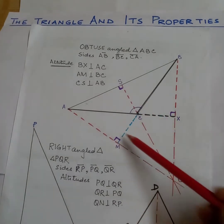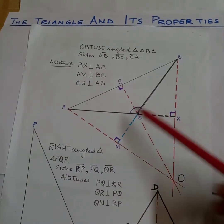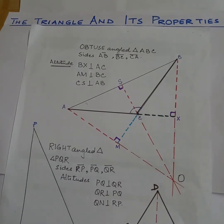And this point where the three altitudes meet is called the ortho center.